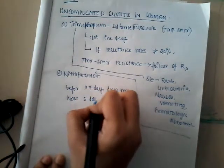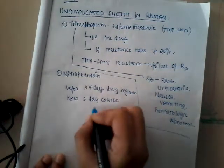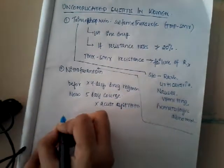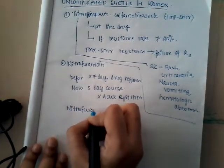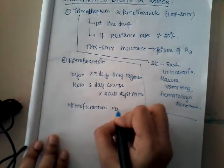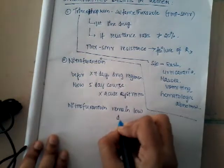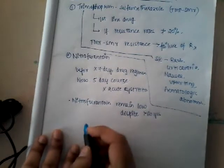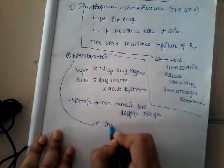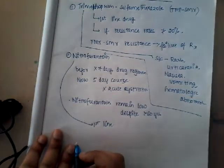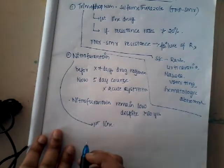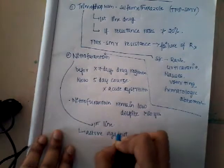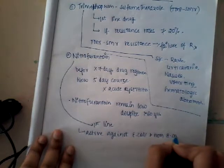Nitrofurantoin resistance is very low despite being used for more than 60 years, so it can also be considered a first-line drug by many physicians. Nitrofurantoin is mostly active against E. coli and also non-E. coli organisms.